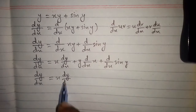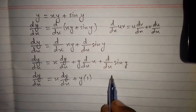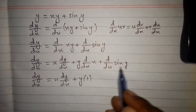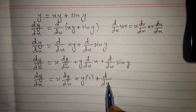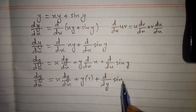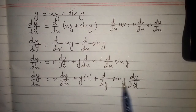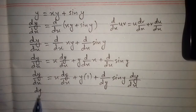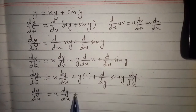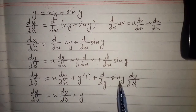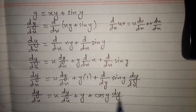Now the derivative of x is 1, so we have 1 here. For sin(y), we cannot differentiate it directly with respect to x, so we will apply the chain rule: d/dy of sin(y) multiplied by dy/dx. Since we can differentiate sin(y) with respect to y, we get dy/dx equals x times dy/dx plus y, and the derivative of sin(y) is cos(y) multiplied by dy/dx.